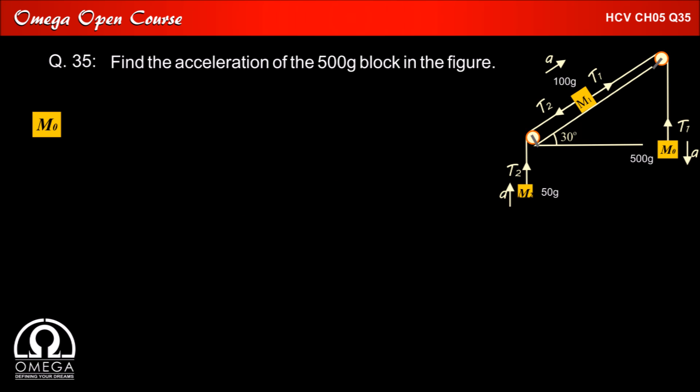If we draw the free body diagram of M0, gravitational force M0g acts downwards, tension T1 upwards, and acceleration A in the downward direction. Writing the equation of motion in vertical direction, we get M0g - T1 = M0a.